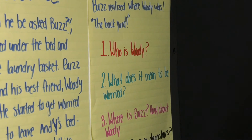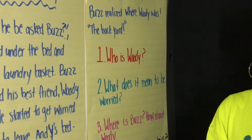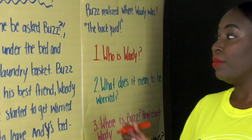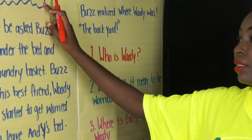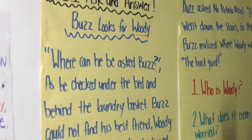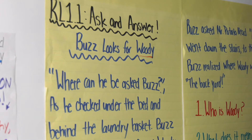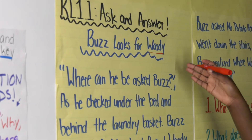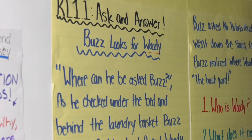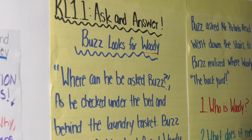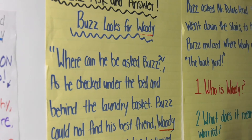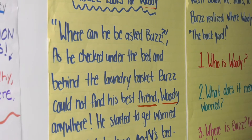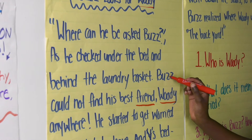Who is Woody? Let's go back to the story to answer this. We have Woody here, so let's underline his name. Buzz Looks for Woody — look how the title is helping us already with our answer. So far we know that Woody is somebody that Buzz is looking for. Let's go back to see where else we see Woody's name.